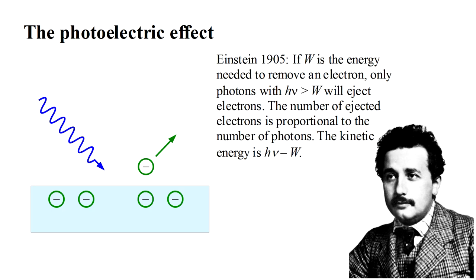It was Einstein who in 1905 explained this by considering Planck's quanta as particles moving at the speed of light, what we now call photons. If W is the energy needed to remove an electron, only a photon with an energy greater than W can eject an electron. The total light energy, which represents the number of photons striking the material, will determine the number of electrons ejected, but not whether electrons are ejected. And the kinetic energy of the ejected electrons will simply be the energy left over from this photon-electron process.